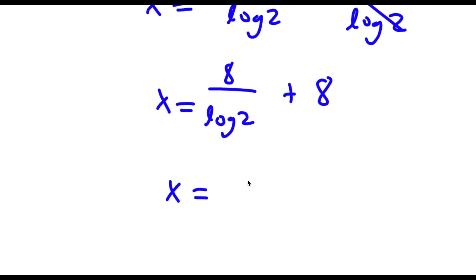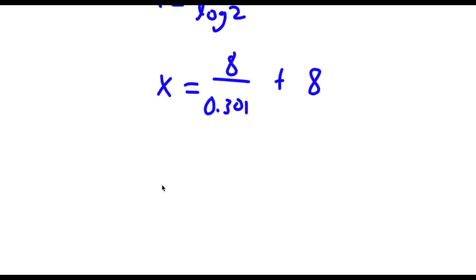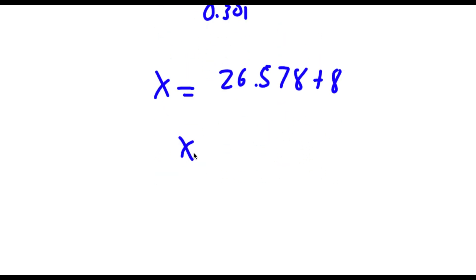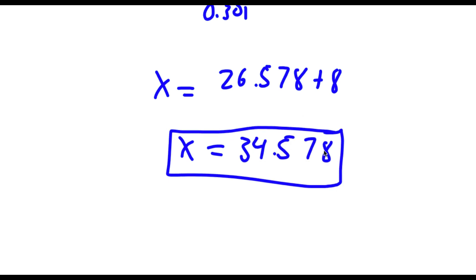Now log 2 equals 0.301, so I have 8 over 0.301 plus 8. That gives 26.578 plus 8, which equals 34.578. So this is my answer.